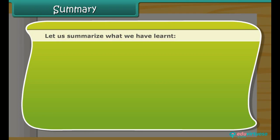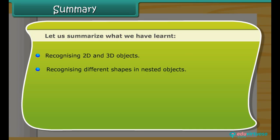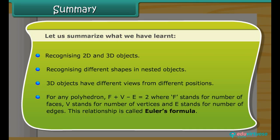Summary. Let us summarize what we have learned: Recognizing 2D and 3D objects, recognizing different shapes in nested objects, 3D objects have different views from different positions. For any polyhedron F plus V minus E is equal to 2, where F stands for number of faces, V stands for number of vertices, and E stands for number of edges. This relationship is called Euler's formula.